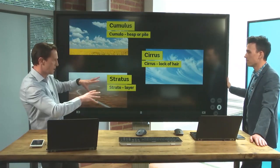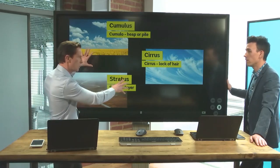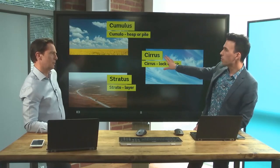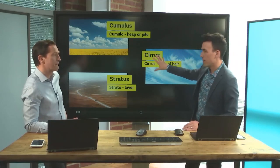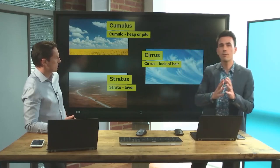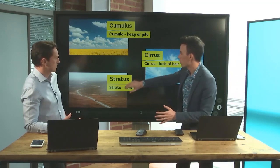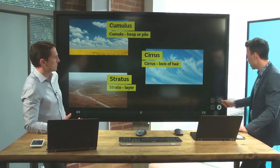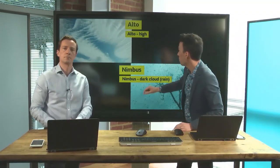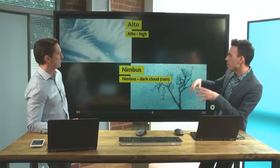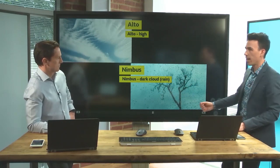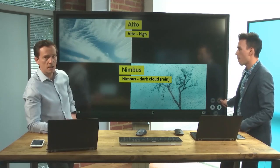Those are the three main types he categorized them into, but he got a bit more complicated and added a couple extra. The beauty of his system is that you can combine these names — cirrus with stratus gives you cirrostratus, or cumulus with stratus gives you stratocumulus. And with just two more words to learn — alto meaning high, and nimbus, which technically means dark cloud but we use it to refer to rainy clouds — if it's got nimbus in it, it's going to be raining.